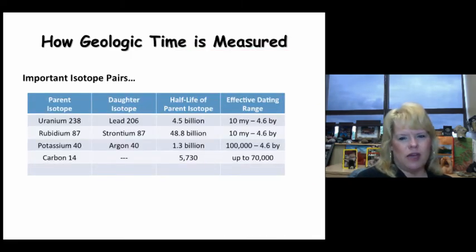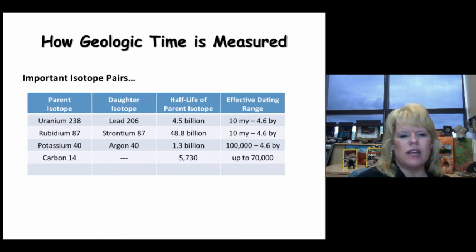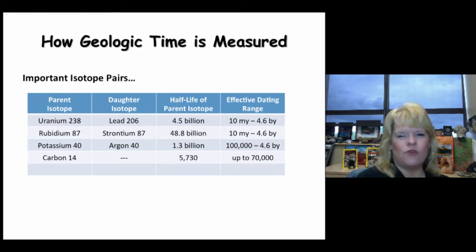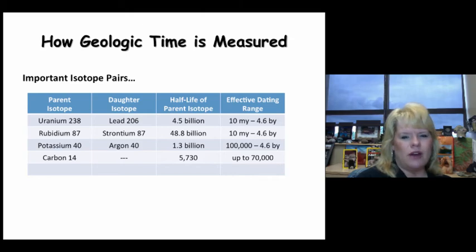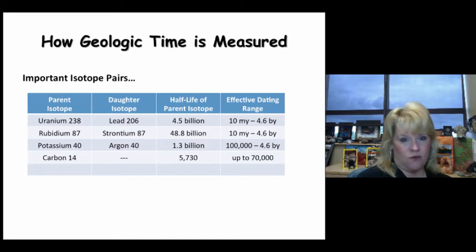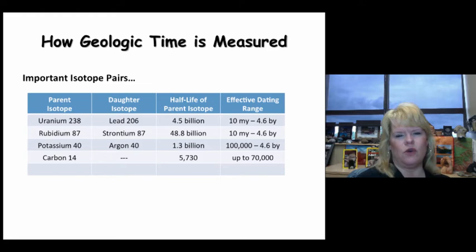There are several important isotopic pairs. First, uranium-238 is the parent isotope; after a half-life it turns into lead-206. The half-life is 4.5 billion years, making it effective for dating rocks from about 10 million years to 4.6 billion years of age — a super choice for even meteorites from the origins of our solar system.